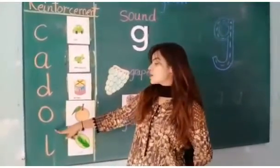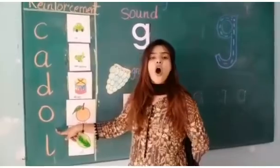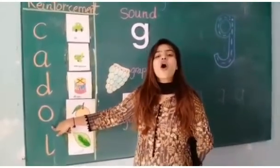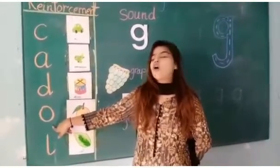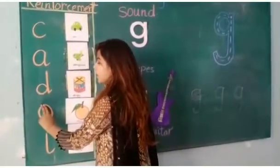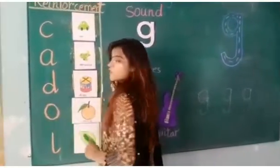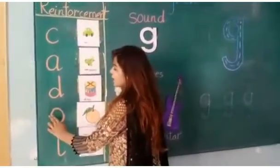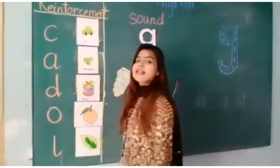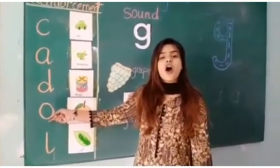Now let's proceed towards the fourth sound which is aw. Which sound is this? Aw. Come on, now trace it with me. Aw is round and round. Well done. Which sound is this? Aw.